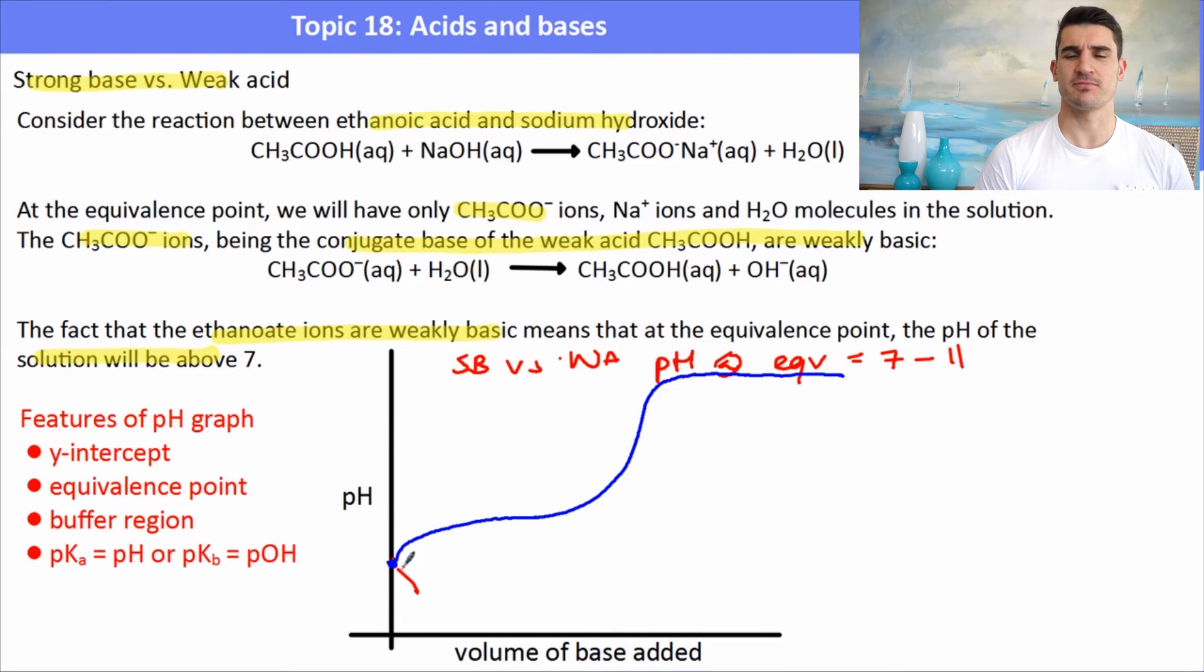We have the concentration of H plus initially in the flask. We could identify our equivalence point from the inflection point of the graph. Here we're saying that it's around 8.5. We can identify the buffer region as the section between the initial starting point, the y-intercept and the equivalence point. In this case, our buffer would consist of our acid and its conjugate base. And remember, at the half equivalence point, we would have half of the acid neutralized, so our pH will be equal to our pKa value.